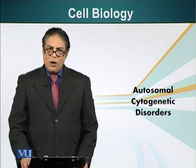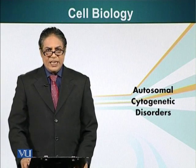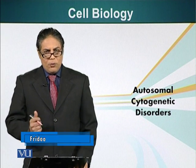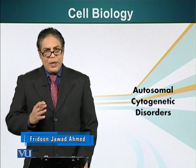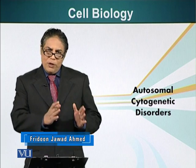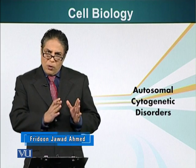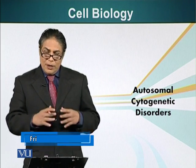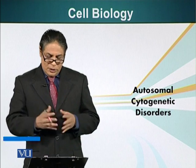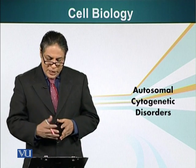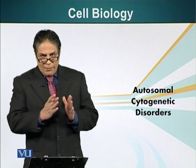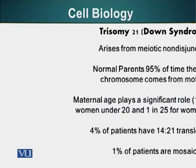In this module, we will talk about cytogenetic disorders involving autosomes. We have 46 chromosomes — 44 of them are autosomes, meaning they do not contain any information regarding sexual determination or differentiation. The two, X and Y, are the sex chromosomes.